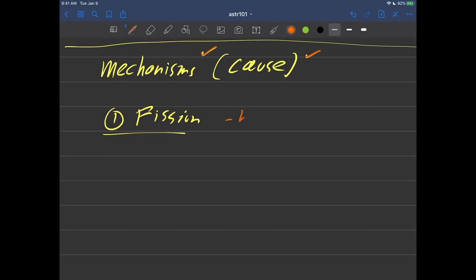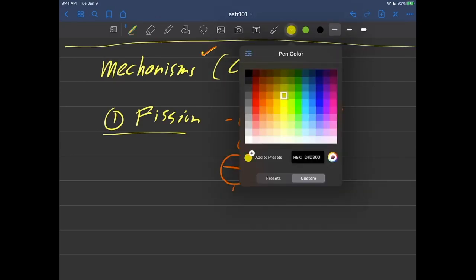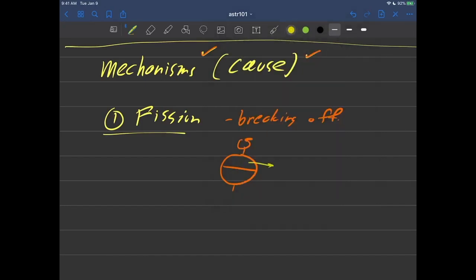Fission is about a portion of the earth breaking off. How could it break off? Well, the early earth might have been spinning. And it turns out that spinning is associated with a force that tends to push things towards the outside.